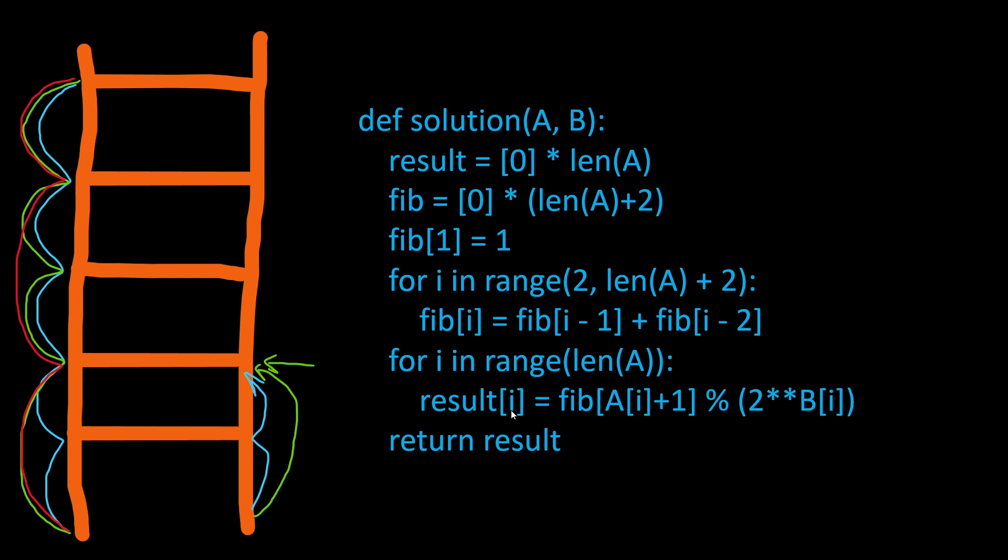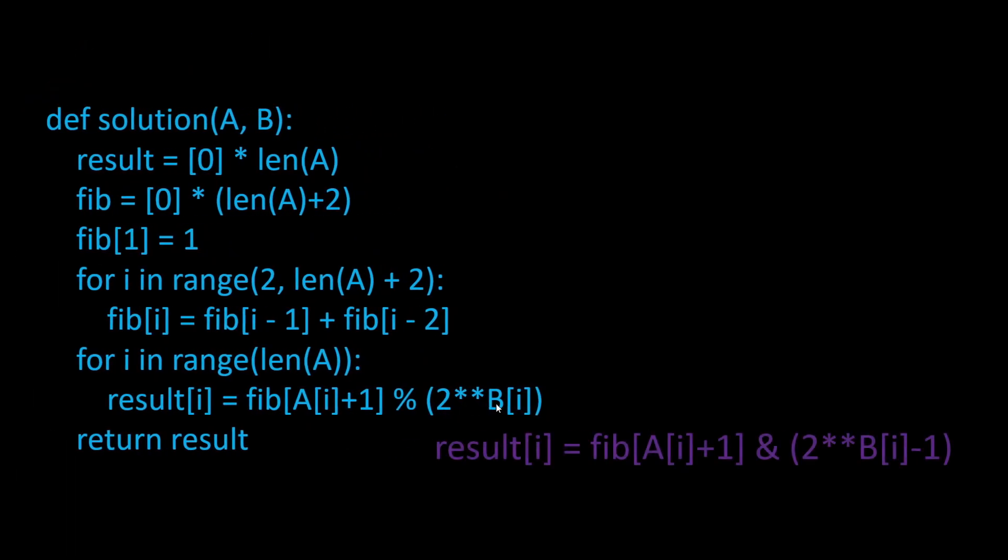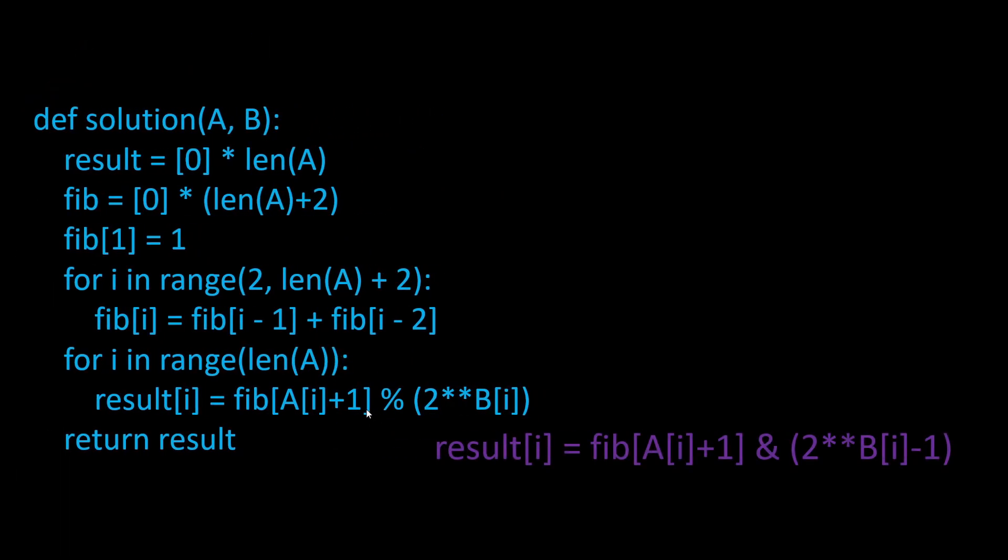And at this point the solution of this problem becomes very technical. It's not algorithmic anymore. It's something that is purely coming from the computer science background. And the best way to make things more performant or more efficient for this algorithm is to replace this line by this line. Notice that now the result[i] is equal to the Fibonacci number A[i] plus one. But here we are doing a bitwise AND operator. And then it's going to be with 2 to the power of B[i] minus one.